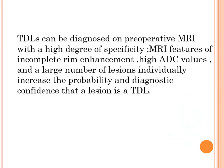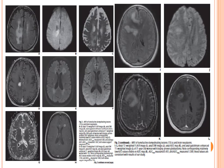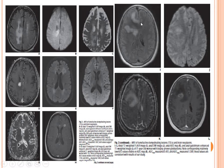Discussion about the GBM case sequences: FLAIR, diffusion, ADC, gadolinium-enhanced T1-weighted image. Reviewing diffusion and ADC for the last case — the lesion is bright on diffusion, indicating restricted diffusion. To decide definitively, we must look at the ADC. It is hypointense on ADC, indicating restricted diffusion — not corresponding to TDL, more in favor of tumor.